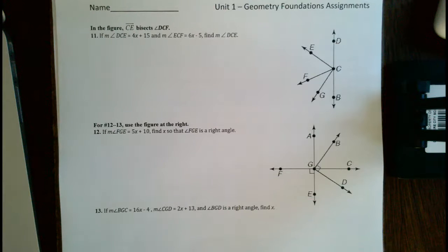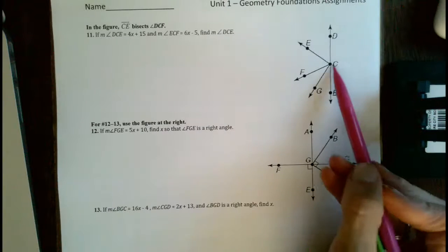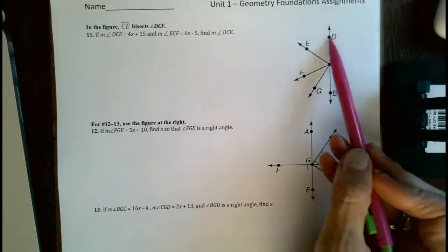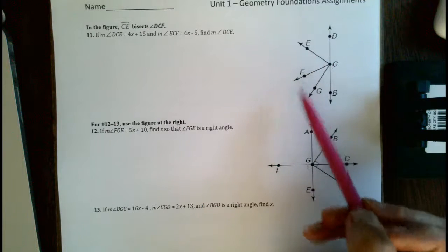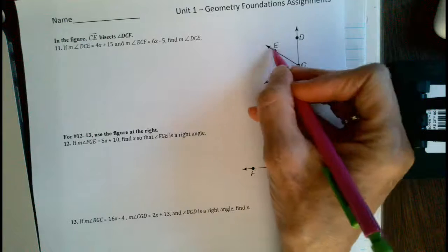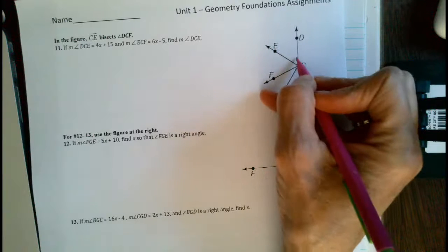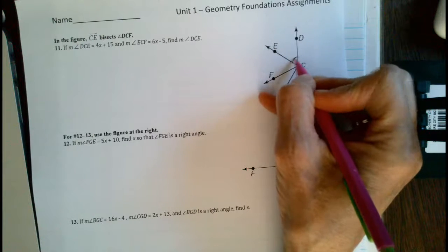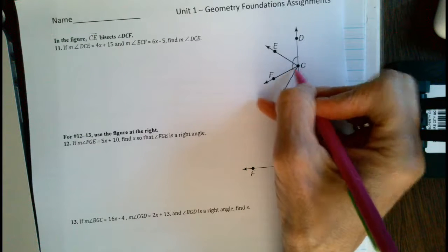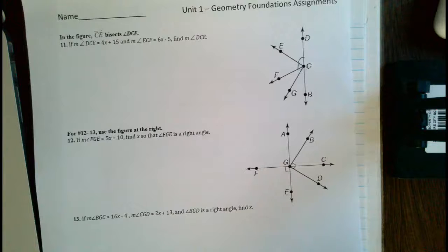One thing to notice is above that in bold it tells us that in the figure CE bisects angle DCF. So that means that CE breaks apart this angle into two parts. Those are both the same value.